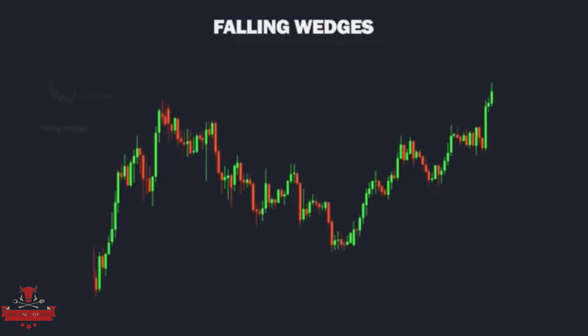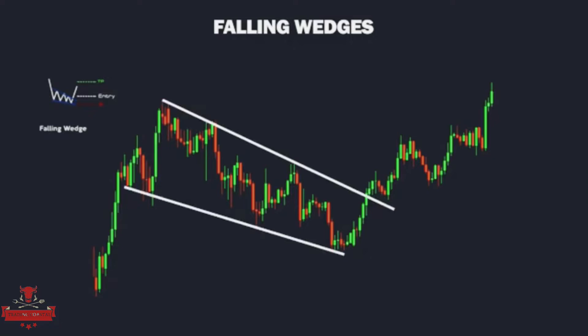As the opposite of a rising wedge, the falling wedge chart pattern occurs when a downtrend moves between two semi-parallel lines. It is a succession of lower highs and lower lows in which bears are initially in control. The entry signal is generated when the price action breaks above the falling wedge's top line and closes the period above that given line.